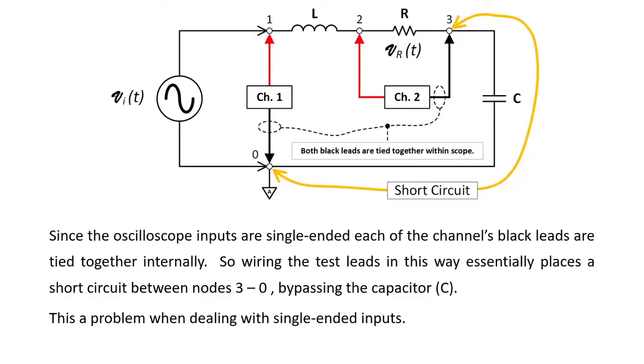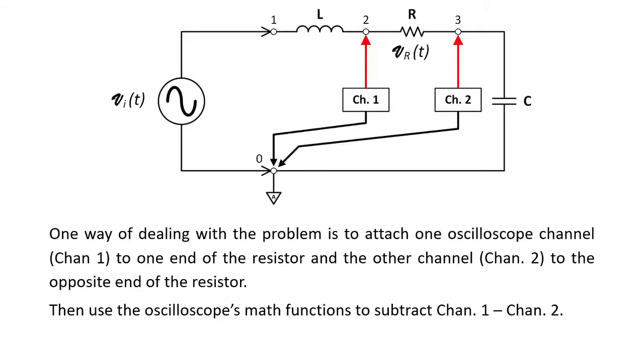How do I get around that using the bench oscilloscope to measure the voltage across that resistor? First method could be you can purchase a differential oscilloscope probe. A good differential oscilloscope probe would set you back probably about $900 to $1,000 up. So that's a little steep for the average person. One method you can do is using the math features.